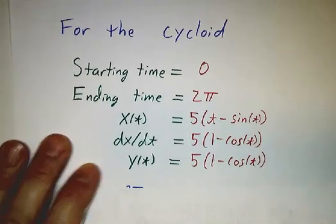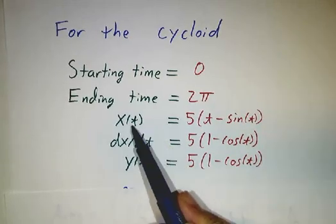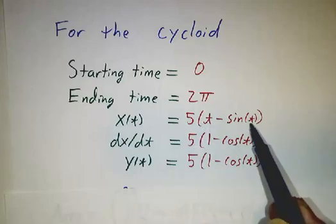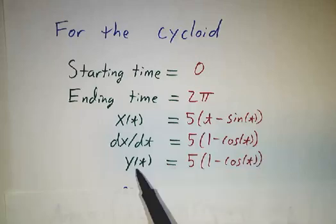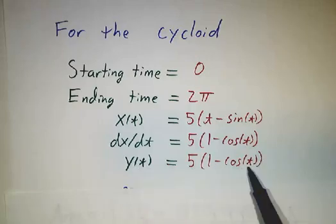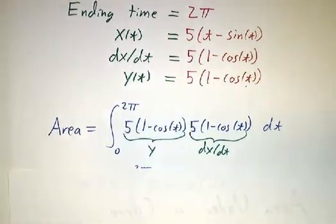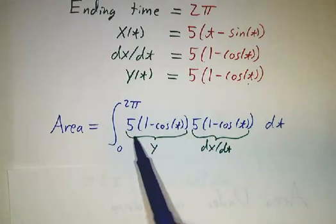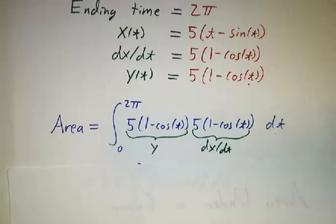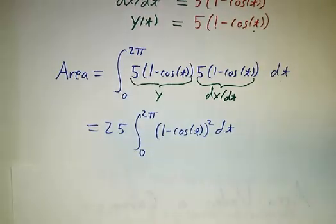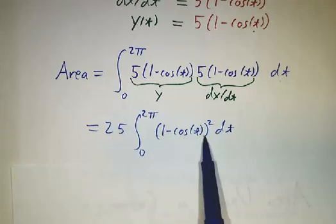The cycloid, we started at time 0. We ended at time 2π. And our equation for x was 5 times t minus sin of t. And we just take the derivative of that and get 5 times 1 minus cos. And y was also 1 minus cos. You put them together, times 5. And you get the area is y times the derivative of x dt. And that gives us, to pull the factors of 5 out, 25 times the integral of 1 minus cos of t squared.